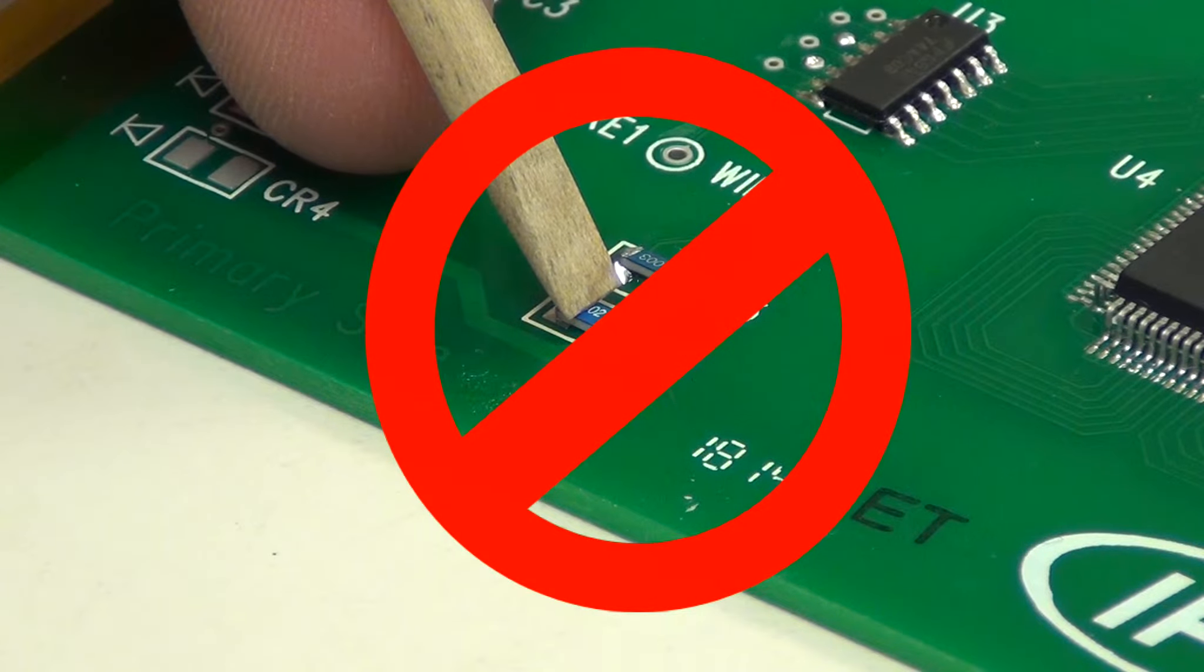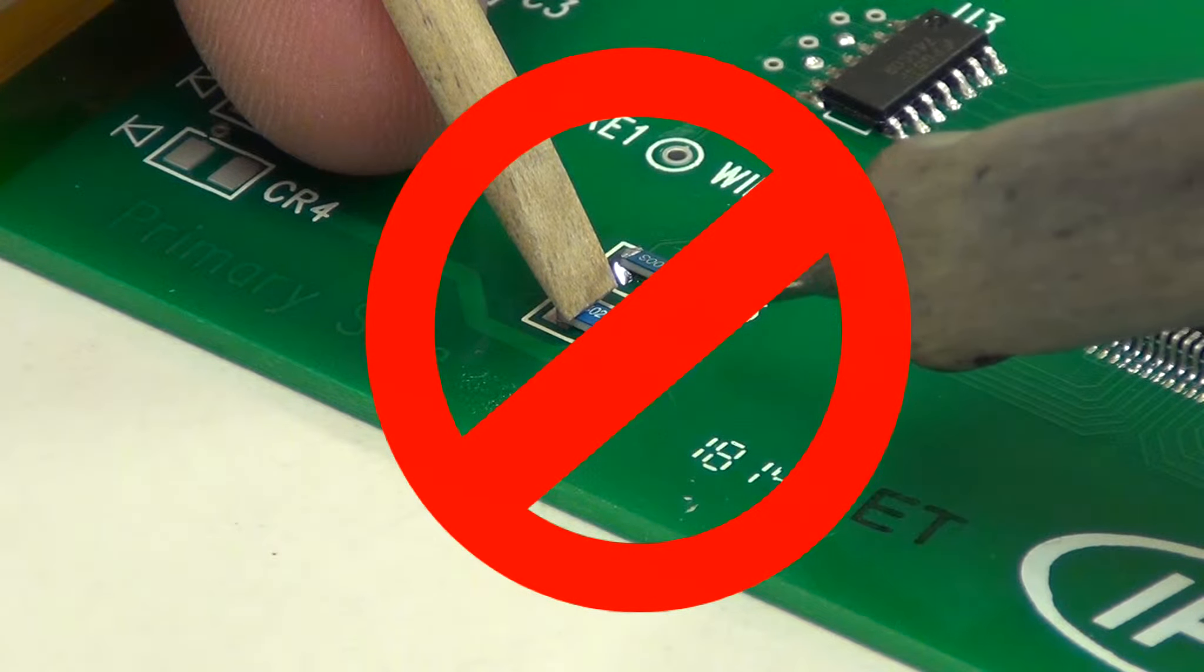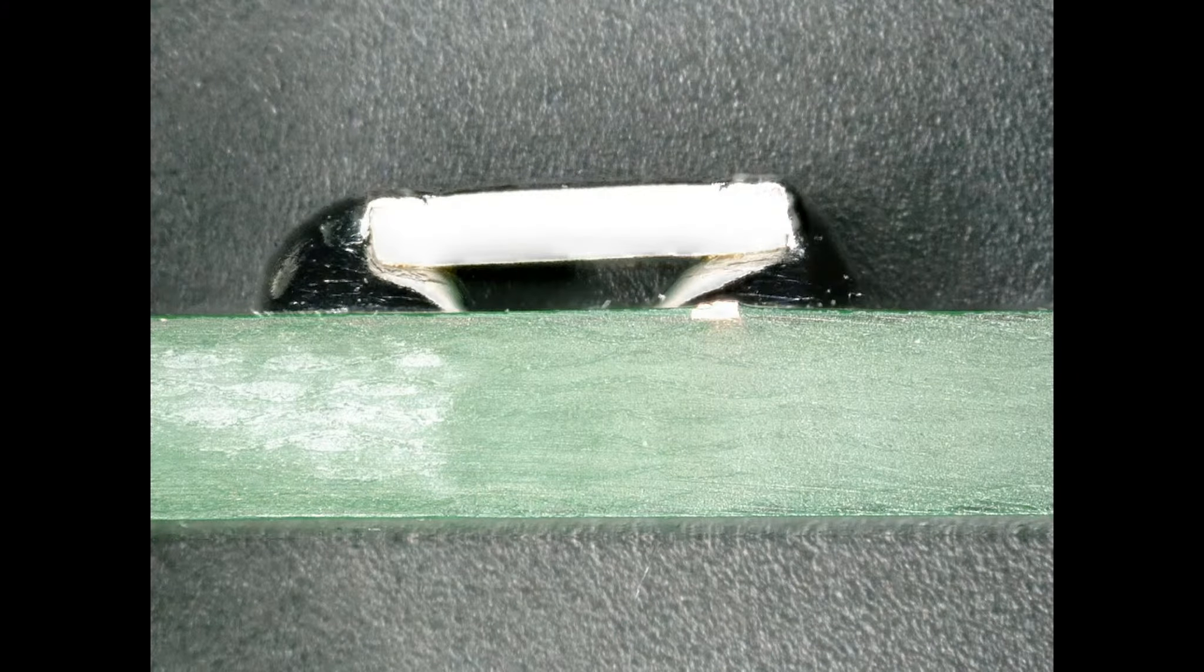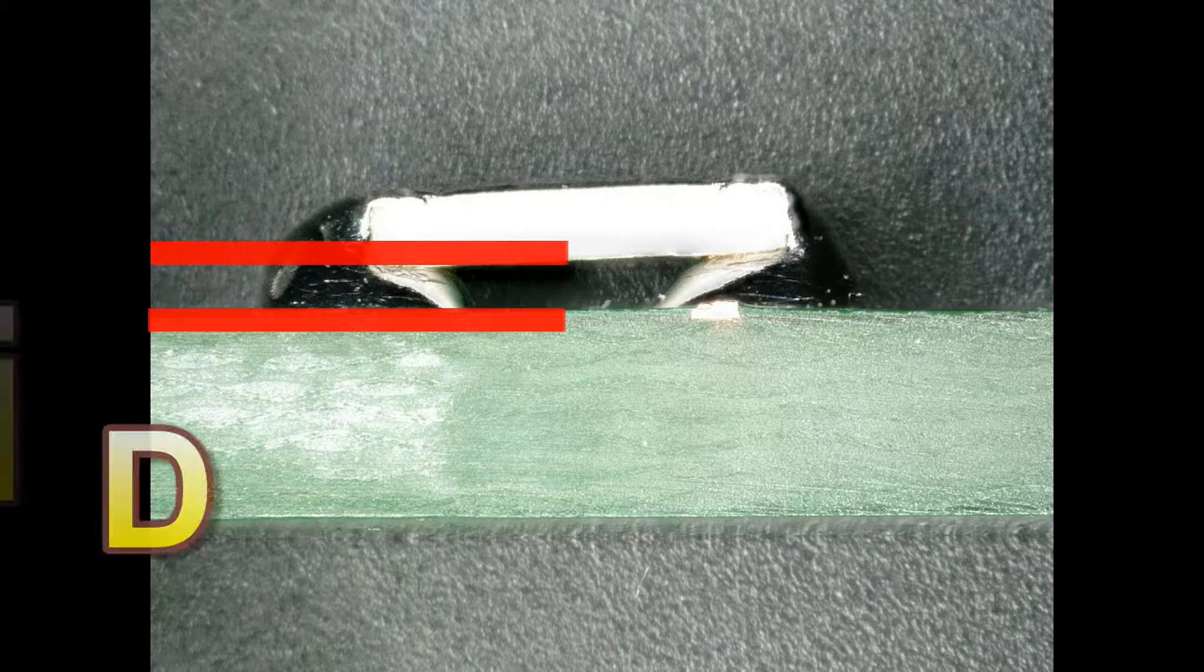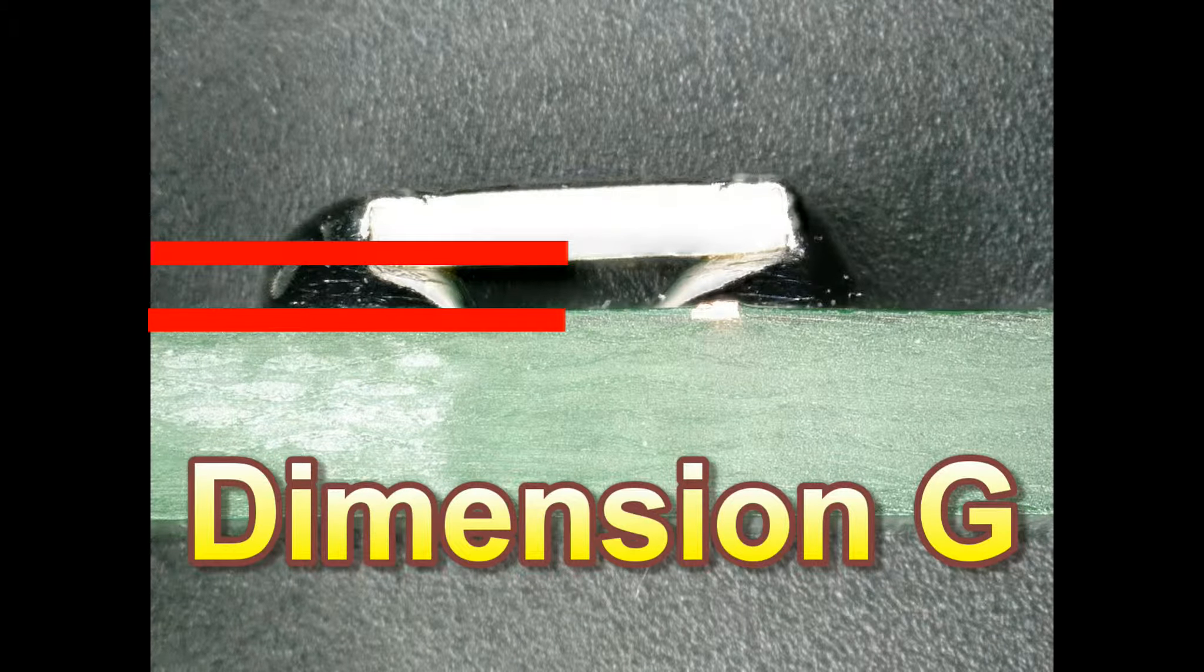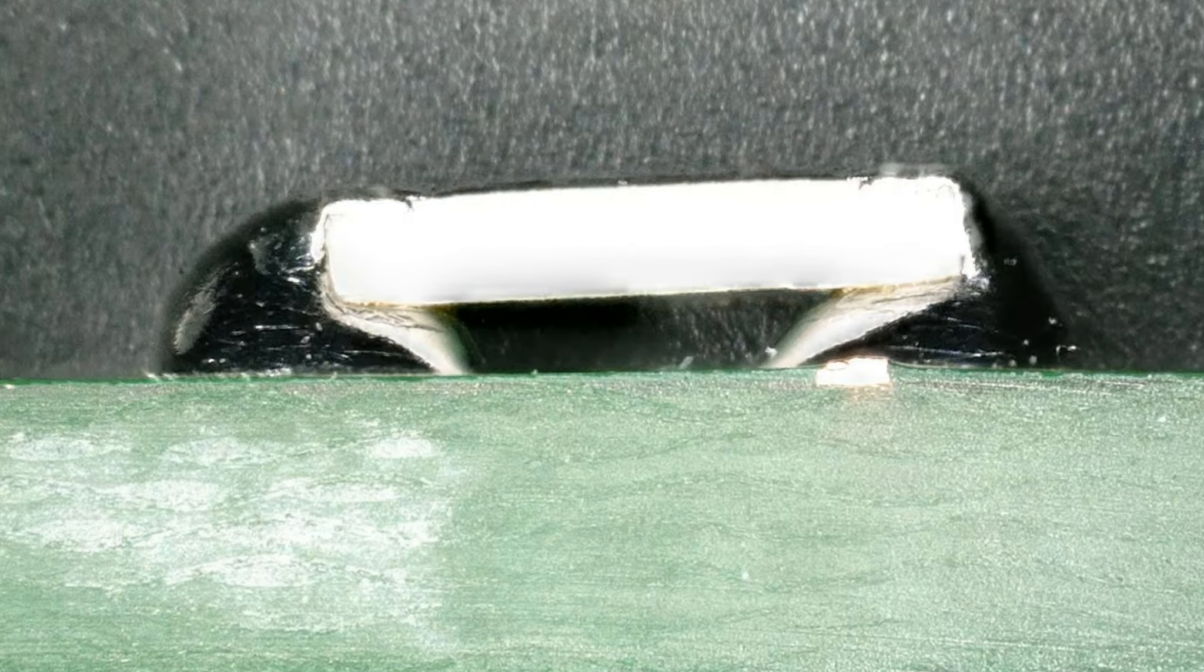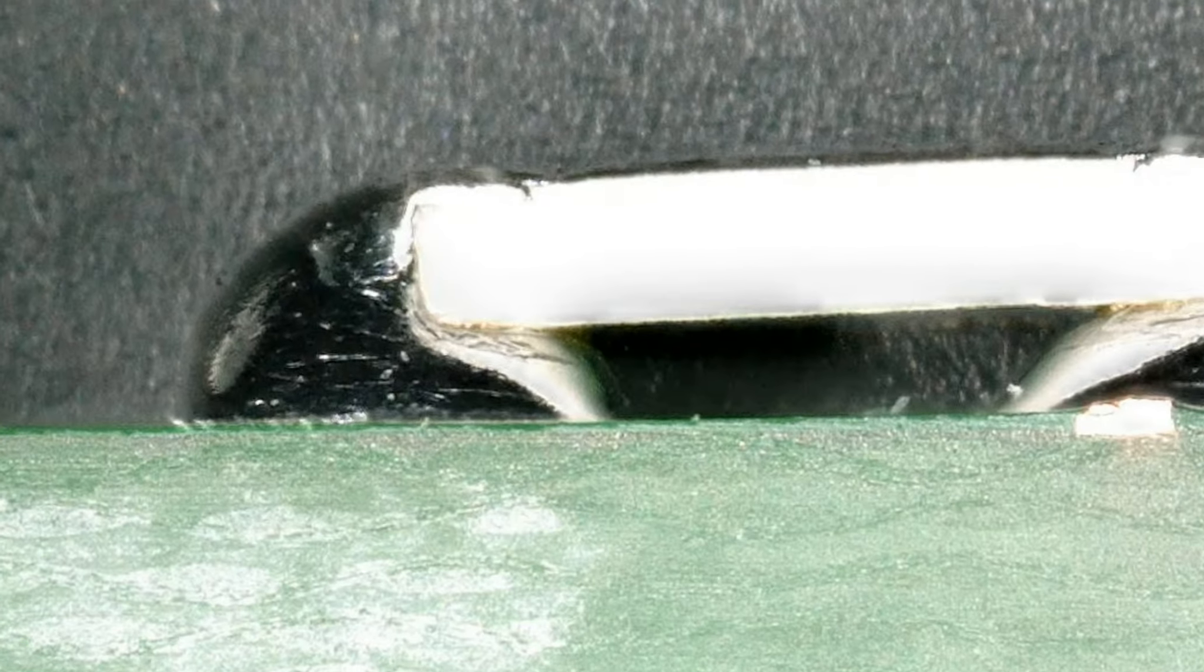In the F revision of the IPC J-STANDARD 001, Clause 7.5.2 goes further stating: Dimension G, which is the solder thickness, is the prime parameter in the determination of solder connection reliability for leadless components.